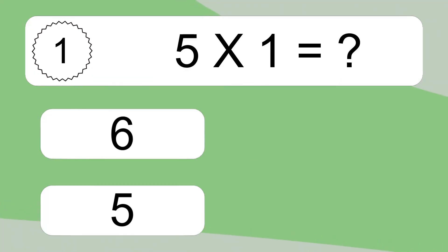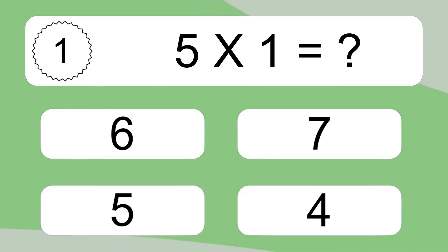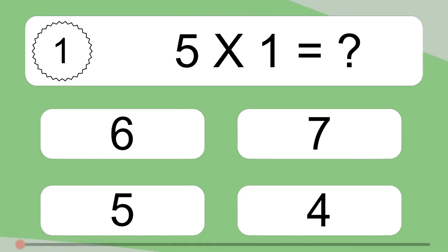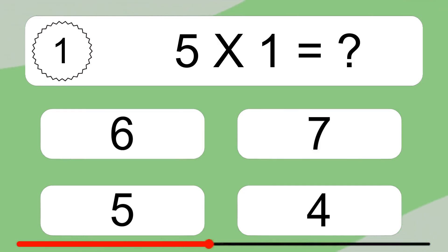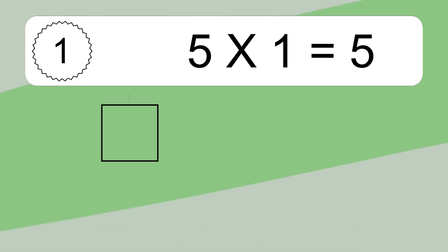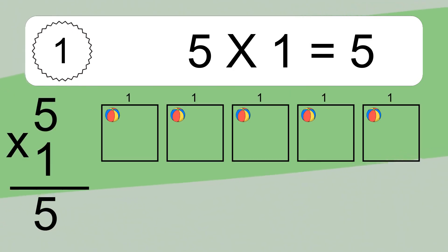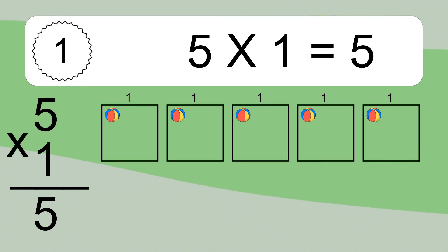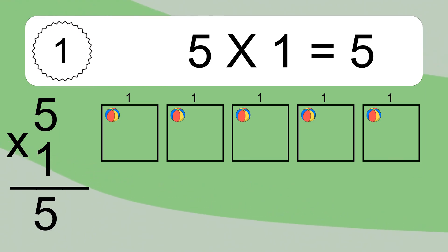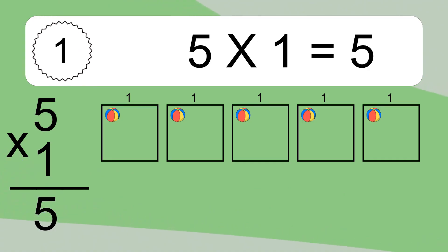5 times 1 equals what? 5 times 1 equals 5. We have 5 boxes, and each box has 1 colorful ball inside. If you count all the balls in all the boxes together, you will have 5 times 1 balls. This equals 5 balls.